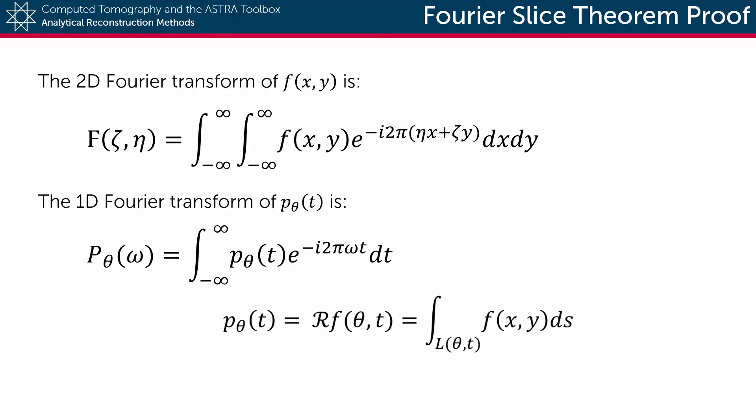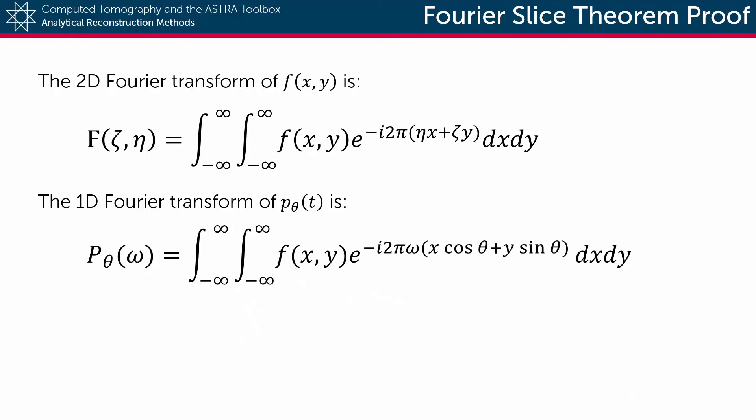So we can then rewrite the Fourier transform of the detector function as the double integral of the object function multiplied by e to the power of minus i 2 pi times omega times x cosine theta plus y times sine theta, which clearly resembles the two-dimensional Fourier transform of the object function.